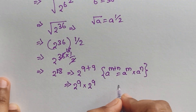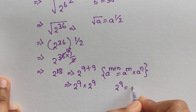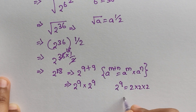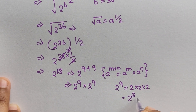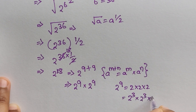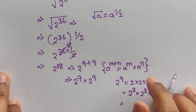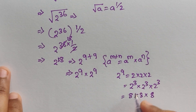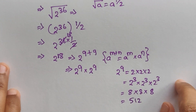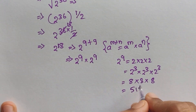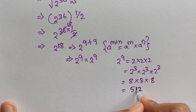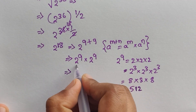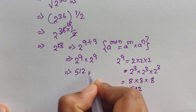The value of 2^9: we can write it as 2 cubed times 2 cubed times 2 cubed. The value of 2 cubed is 8, so 8 times 8 times 8 equals 512. Therefore, 2^9 equals 512.